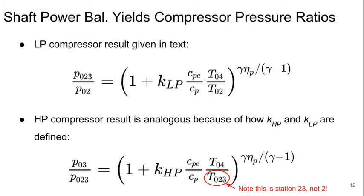So this is what we get if we do this. Starting with the low pressure compressor, this result is given in the textbook, and we get it from the shaft power balance. The pressure ratio is a function of T0.4 over T0.2 and KLP.